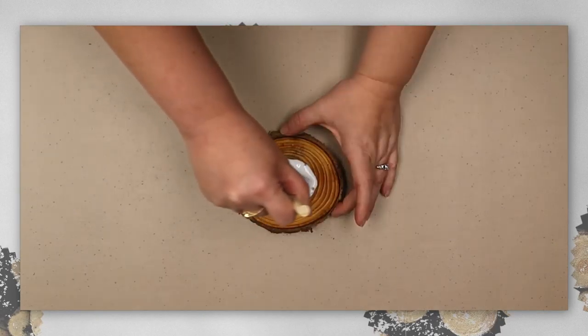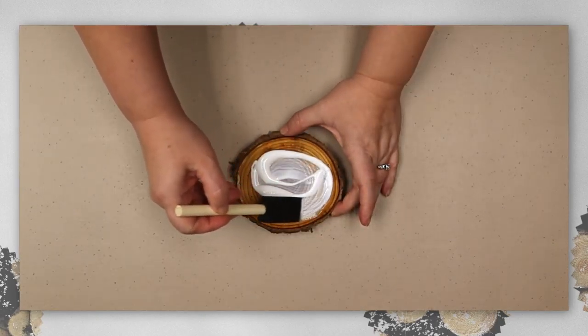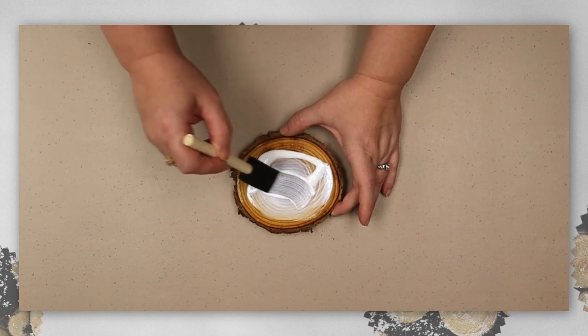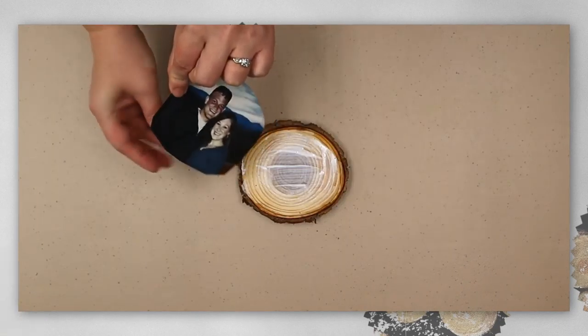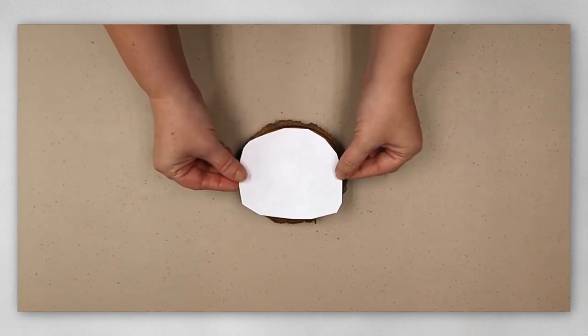To start, make sure your wood piece is free of any dirt and brush on a layer of Mod Podge glue to the wood slice only.